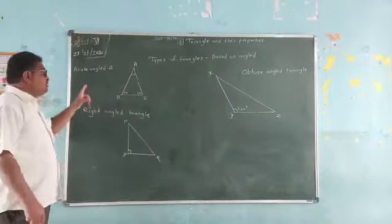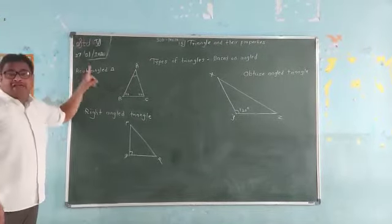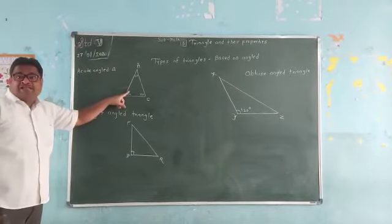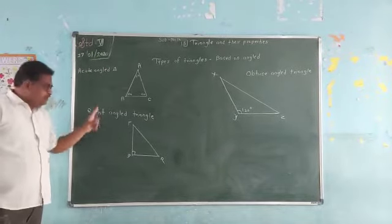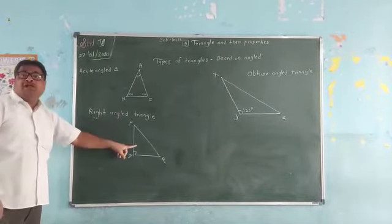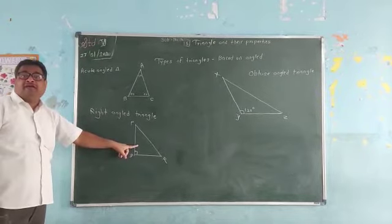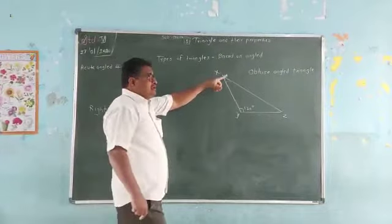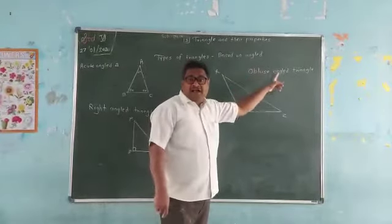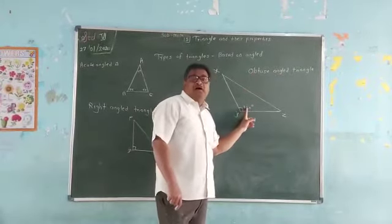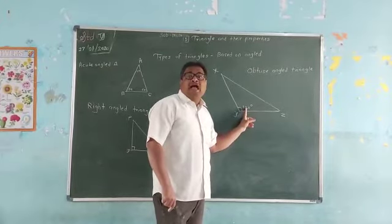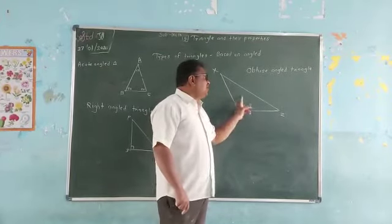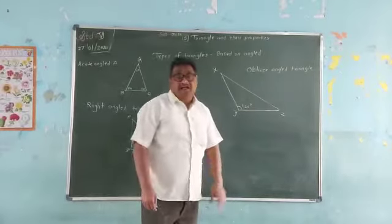Now, listen again. Acute angle triangle: less than 90, all angles. Right angle: only 90 degree angle. And third one is obtuse angle triangle. One angle is more than 90. That is why it is called an obtuse angle triangle.